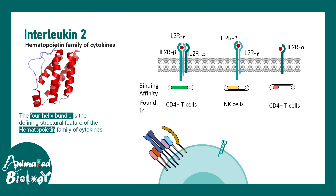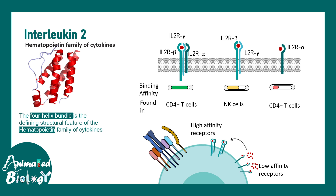You might wonder about the effectiveness of having low affinity receptors. It turns out these low affinity receptors actually sequester more and more interleukin-2 on the surface of the T cell, and whenever necessary, transfer it to the high affinity receptor configuration. This high affinity receptor configuration is required for transmitting the nuclear signal. This is how interleukin-2 family cytokines work overall.